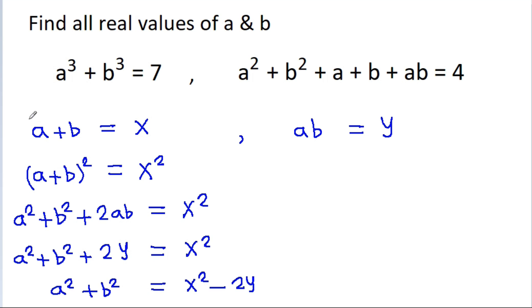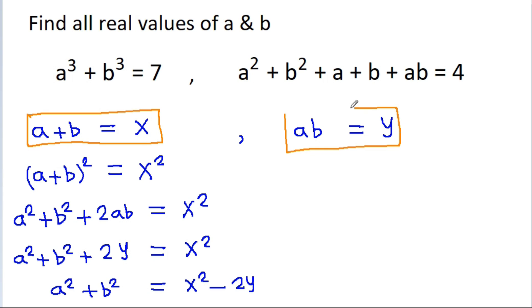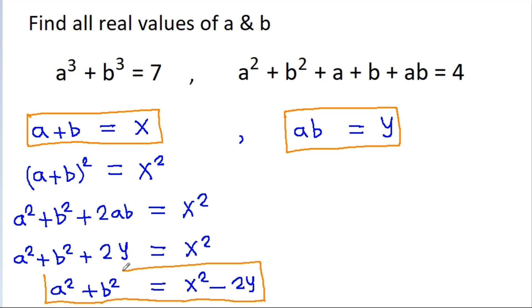So we have: a + b is equal to x, a × b is equal to y, and a² + b² is equal to x² − 2y.